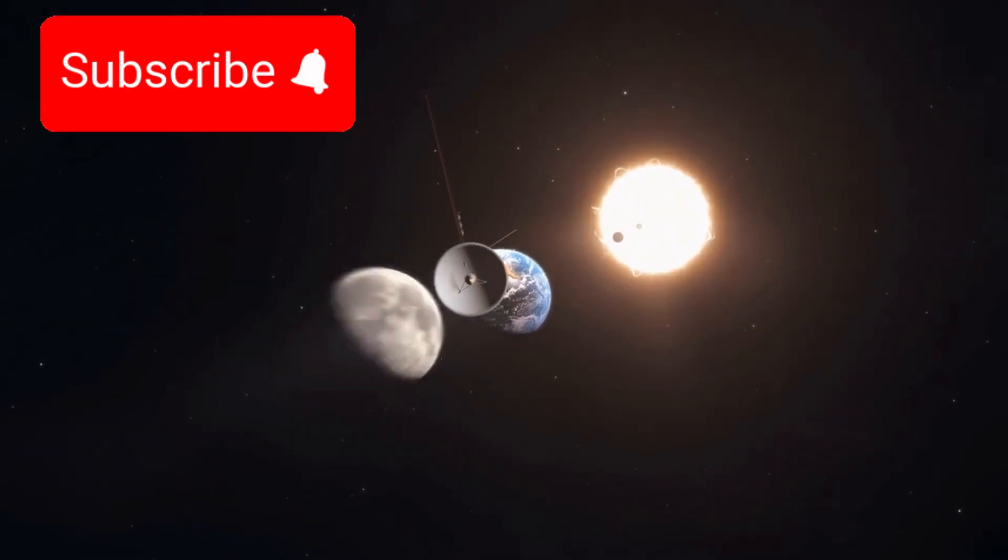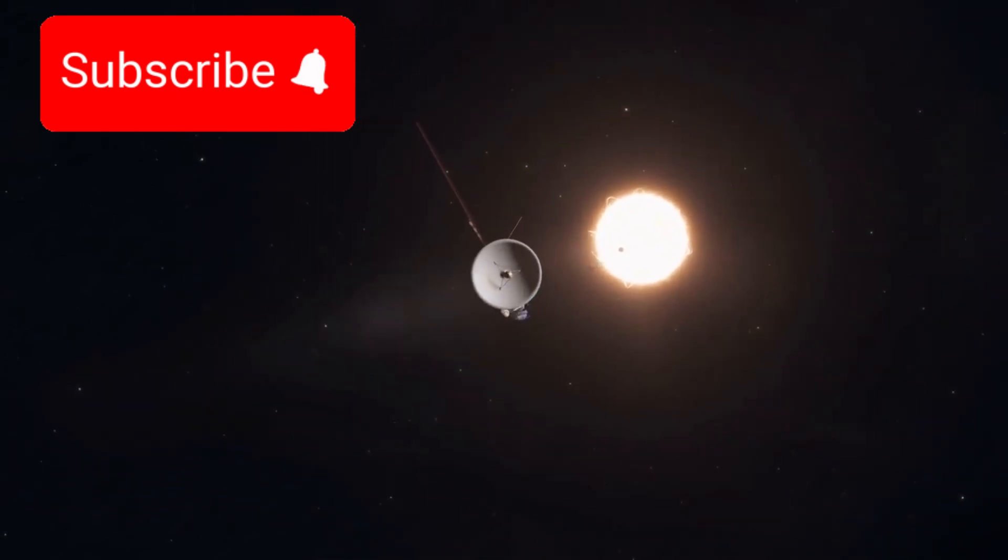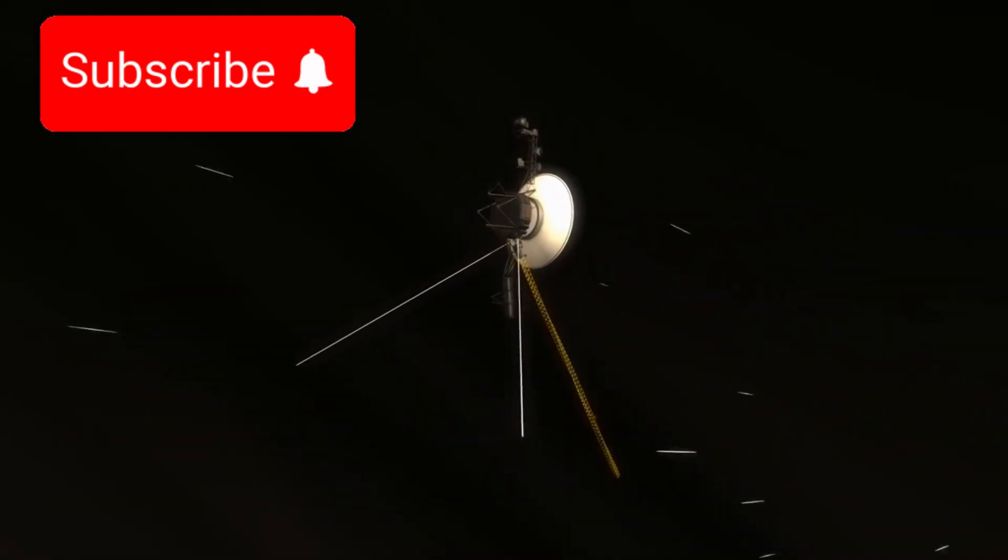Voyager 1 was launched in 1977 as part of a daring mission to study the outer planets. Initially, it was expected to operate for just five years, enough time to fly past Jupiter and Saturn and send back valuable information. But together with its twin, Voyager 2, it far exceeded expectations.